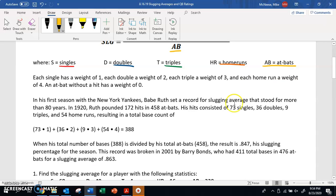When his total number of bases, 388, is divided by his total at-bats of 458, the result is .847, the slugging percentage for the season. This record was broken in 2001 by Barry Bonds, who had 411 total bases and 476 at-bats for a slugging average of .863.